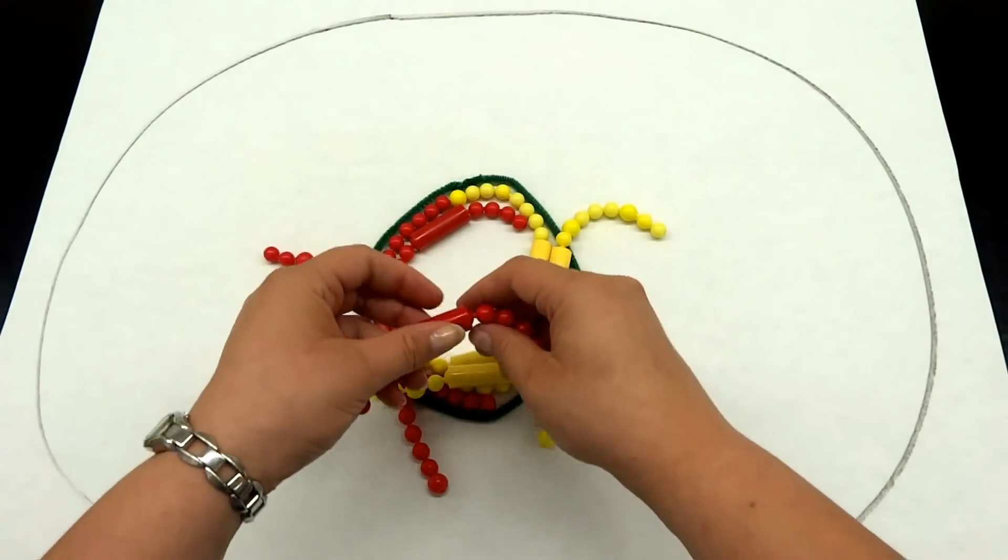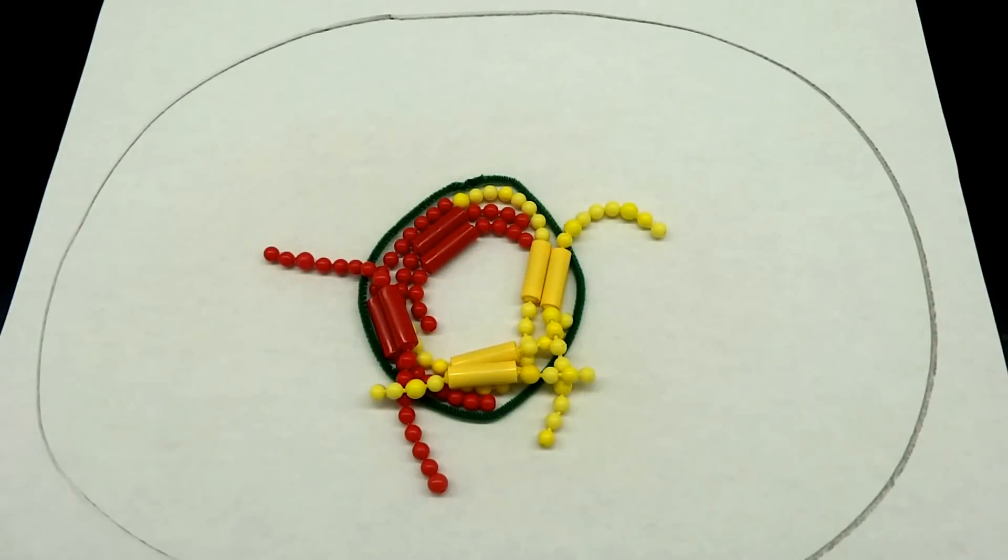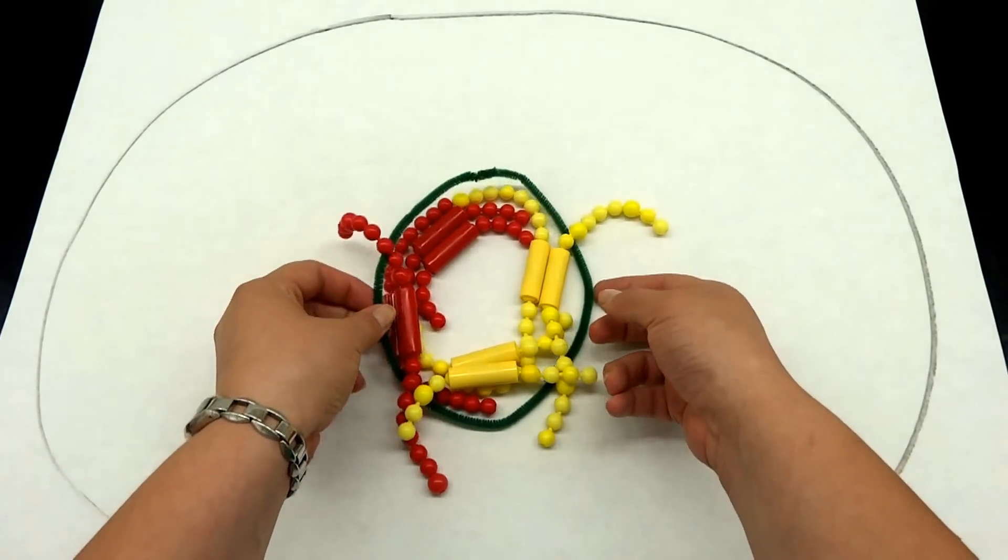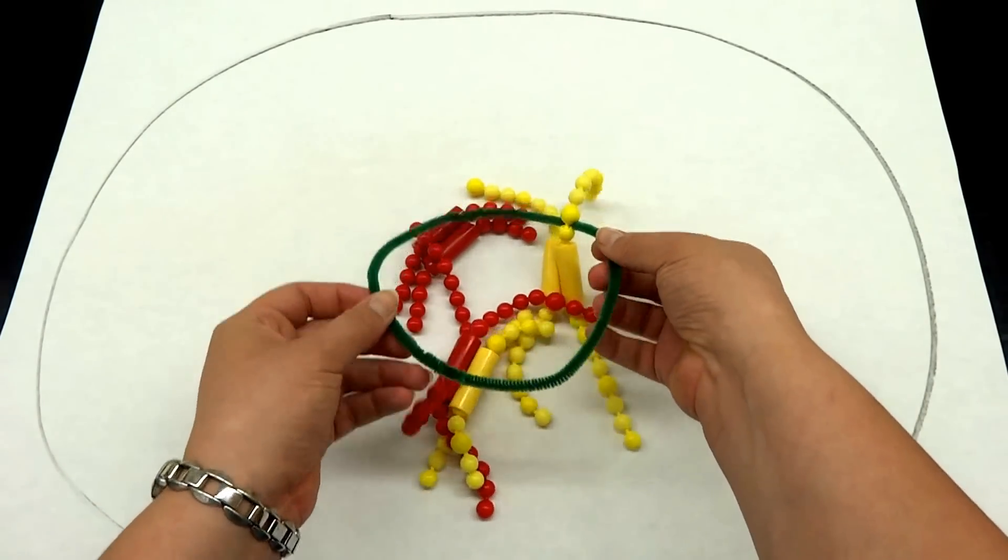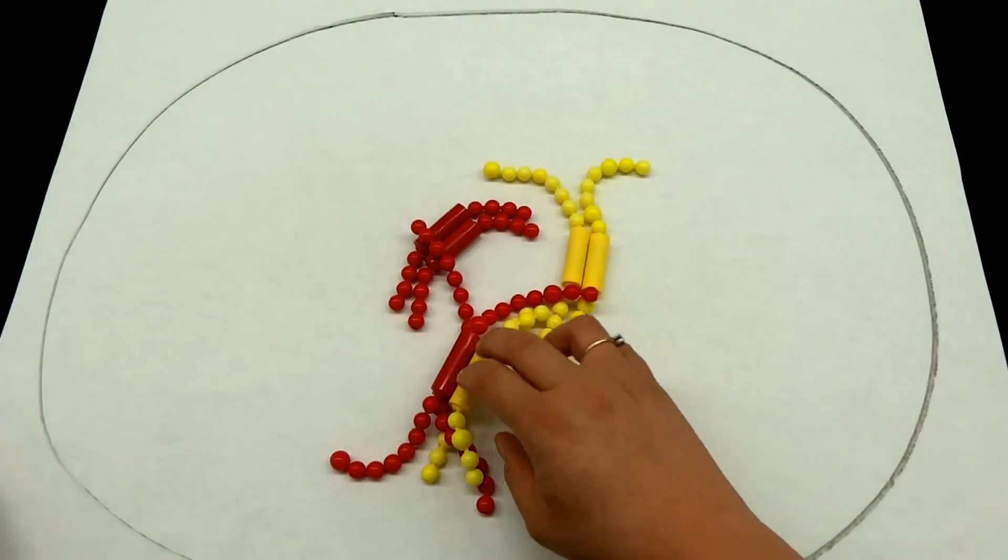As we move into prophase, what's going to happen is our nucleus will begin to disappear, so I'm moving the green pipe cleaner out of the picture.